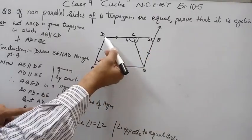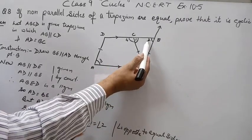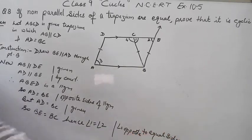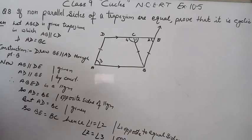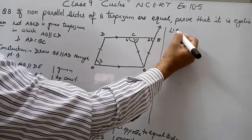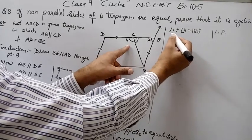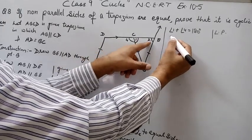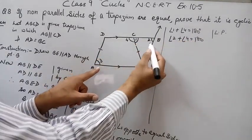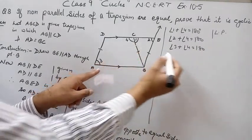Since AD equals BE and AD equals BC, it means BC equals BE. Hence angle 1 equals angle 2, as angles opposite to equal sides are equal. Now angle 2 equals angle 3 because they are opposite angles of a parallelogram. Angle 1 plus angle 4 is 180 degrees — a linear pair. Replacing angle 1 with angle 2 gives angle 2 plus angle 4 equals 180 degrees. Replacing angle 2 with angle 3 gives angle 3 plus angle 4 equals 180 degrees.